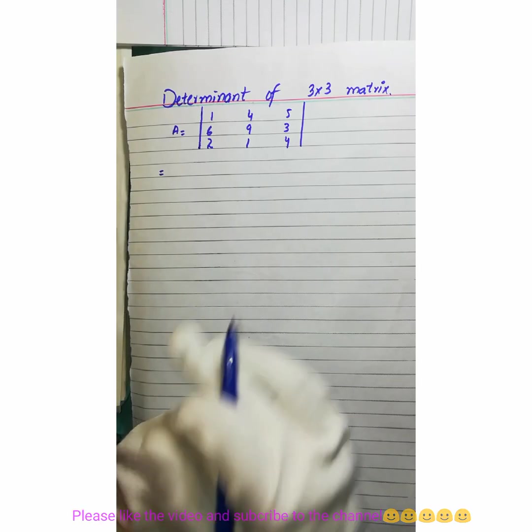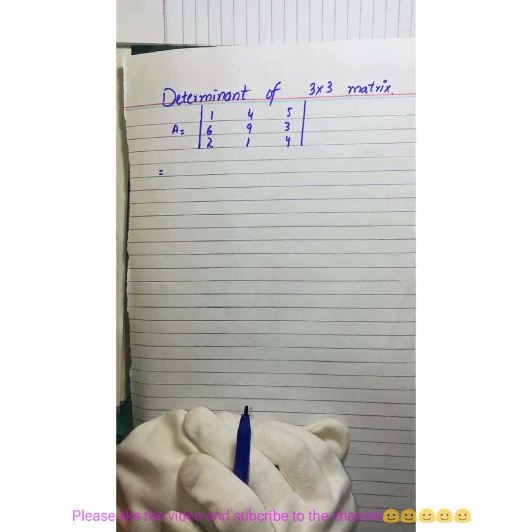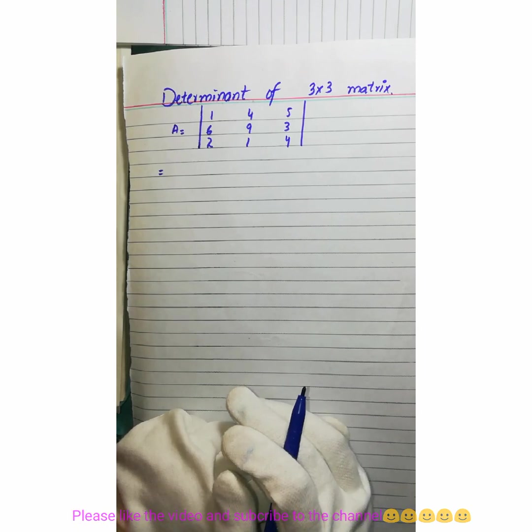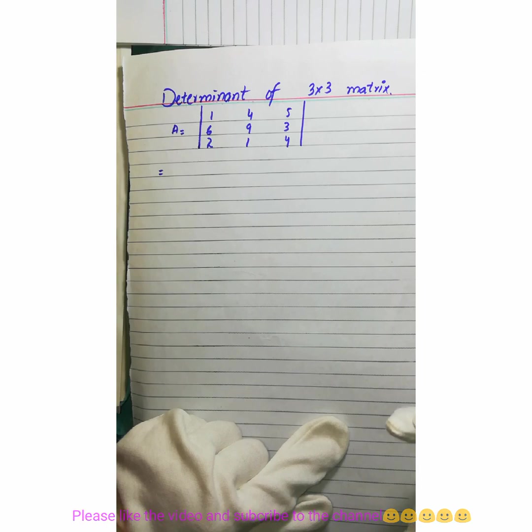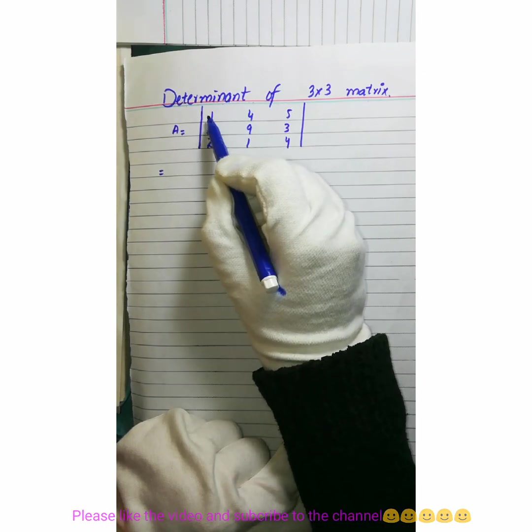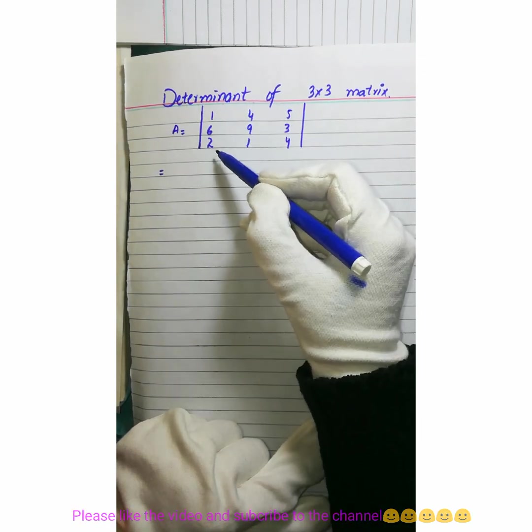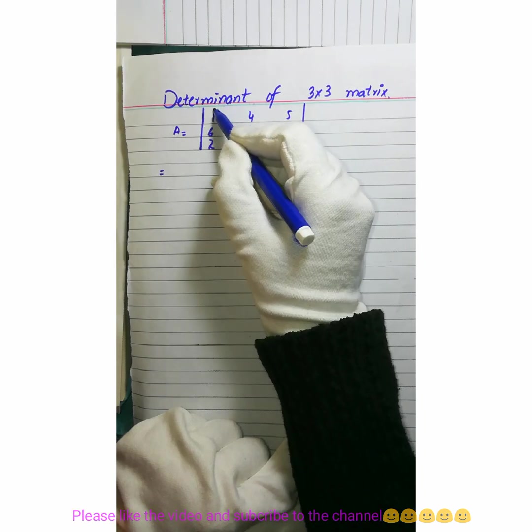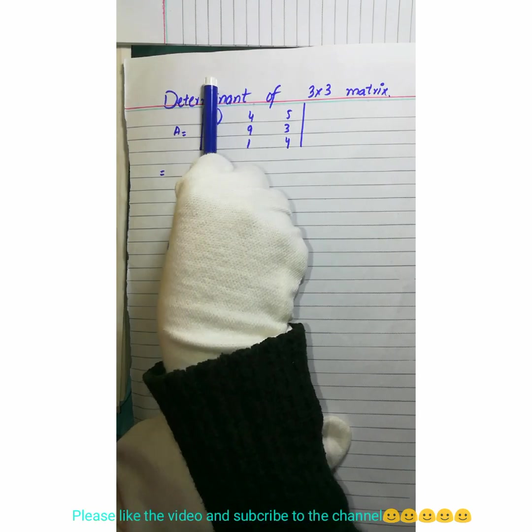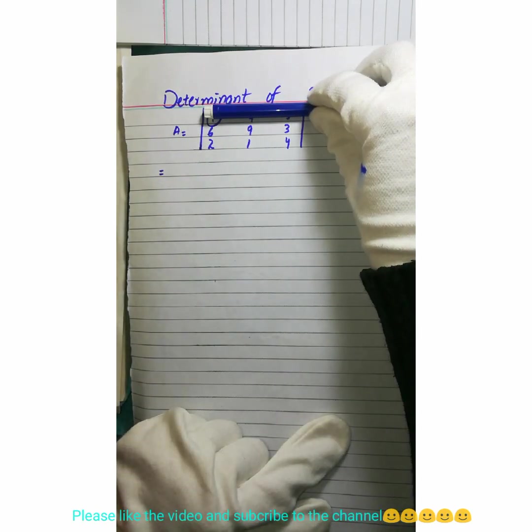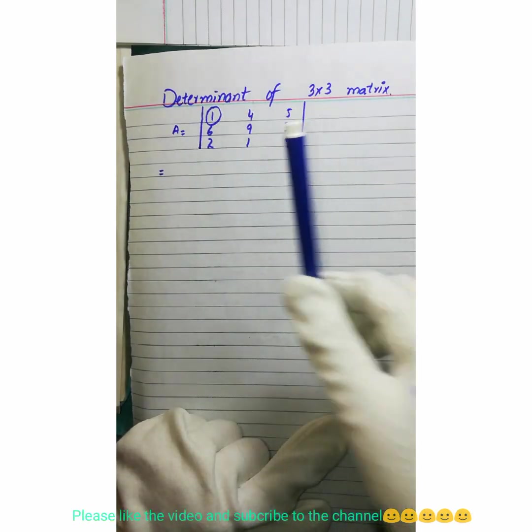Bismillahirrahmanirrahim, today our topic is determinant of 3 by 3 matrix. By solving this example, we have a technique: these are rows and these are the columns. Take the first number from the first row, then ignore that column and that row. We have found that one.